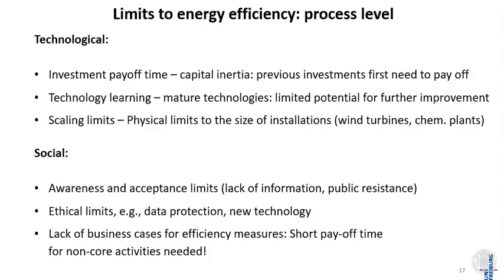The second big technological limit is the technology learning process. At some point, some technologies simply become mature — with current knowledge and materials, we have done what we could, for example improving combustion engines or electric motors. There are not so many new things that can be done, and the remaining things may be too costly. For windows, for instance, the feature is that you can look through them: moving from single to double to triple glazing improves thermal resistance, but every new sheet of glass also decreases reflectivity and the light and visibility coming through — so there is a trade-off.